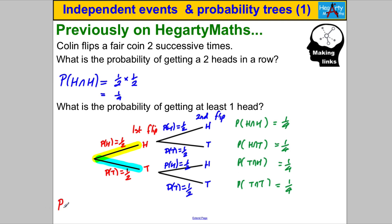Now that wasn't the question we were asked — what is the probability of getting at least one head? So let's look back at our scenarios: this one gets us at least one head, this one does, and this one does. So we add up these: a quarter plus a quarter plus a quarter equals three quarters. And we've done that question.